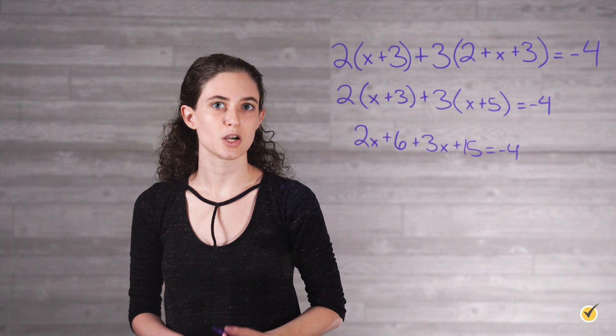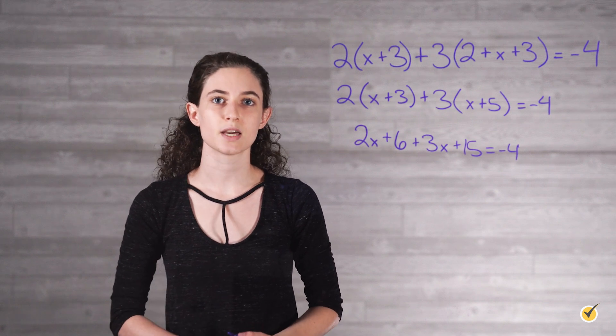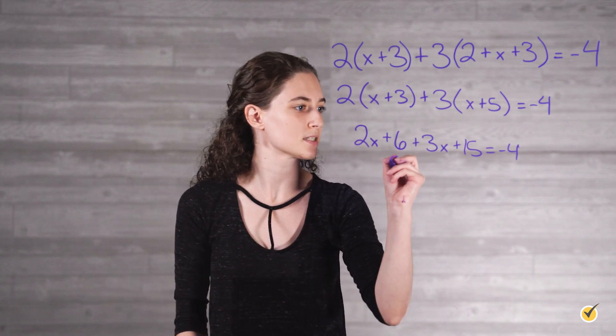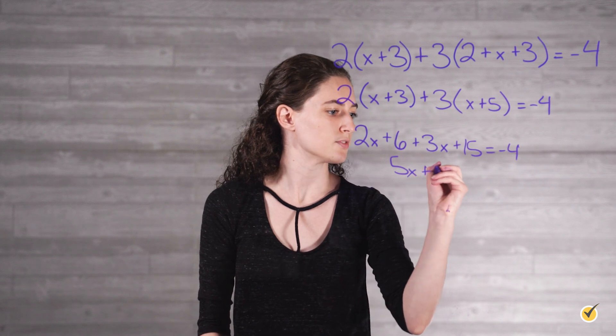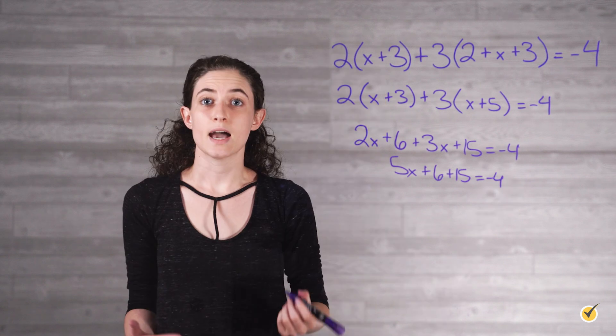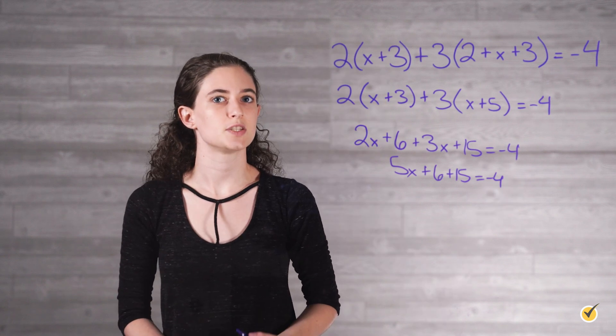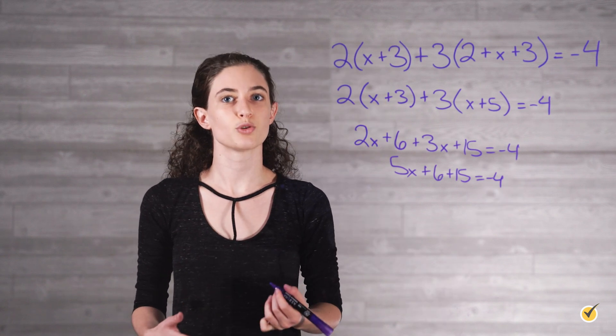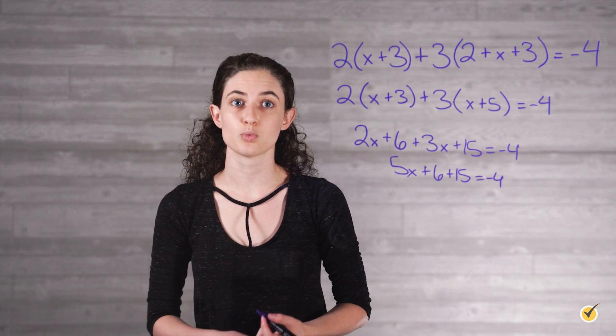The 2x and 3x terms are like terms, so we can add them together to get 5x plus 6 plus 15 equals negative 4. Now the constants 6, 15, and negative 4 are also like terms, and we can combine them as well.